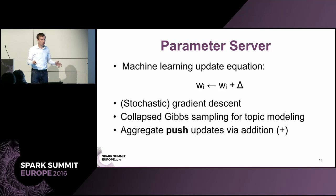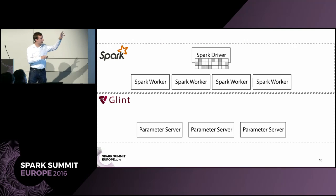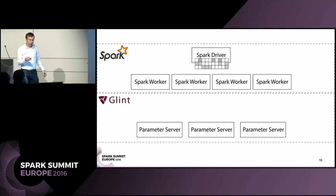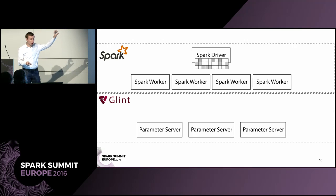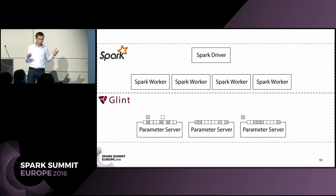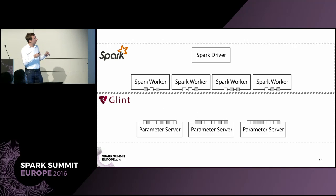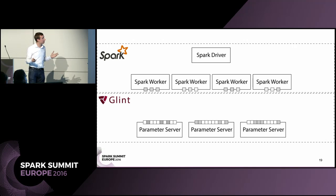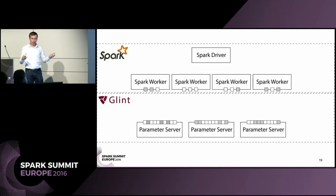I've implemented Glint, which is a parameter server implementation that works nicely with Spark. We go back to the same image: we have a Spark driver, several Spark workers, but now we also have parameter servers running. We take a machine learning model, break it down into smaller parts and distribute it out to these parameter servers. Workers can pull parts of this model, grab only small parts, perform computation on it, and then push their updates back to the parameter servers.